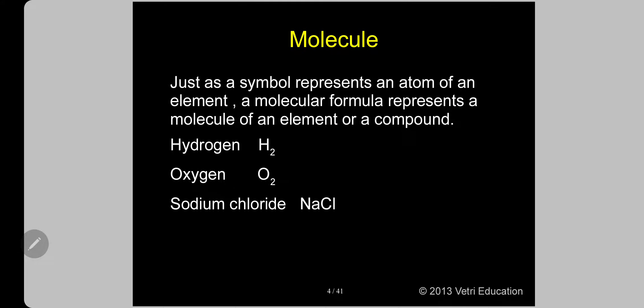Just as a symbol represents an atom of an element, a molecular formula represents the molecule of an element or a compound. In the case of molecular elements: hydrogen H₂, O₂. For molecular compounds like sodium chloride NaCl, there are two different elements — sodium and chlorine.